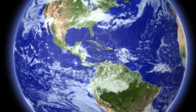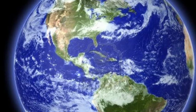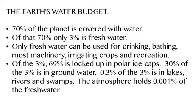If you look at the planet here, you see how much blue there is. It looks like a lot, and it is. 70% of the planet is actually covered with water, and of that 70%, only 3% is freshwater. Freshwater is what we need for drinking, bathing, growing our crops, or even recreation.